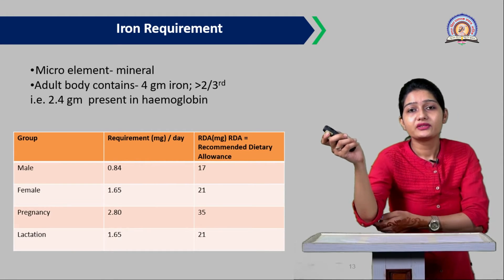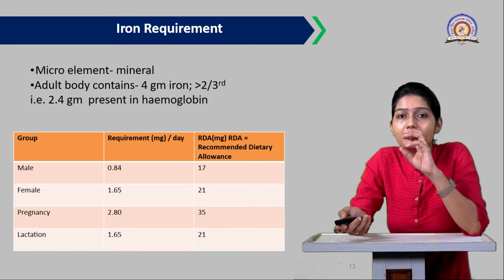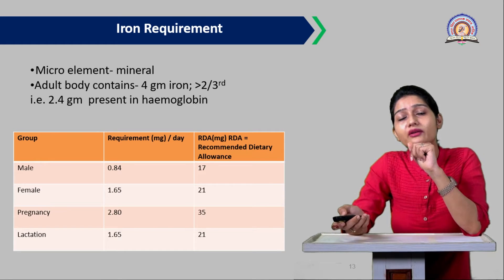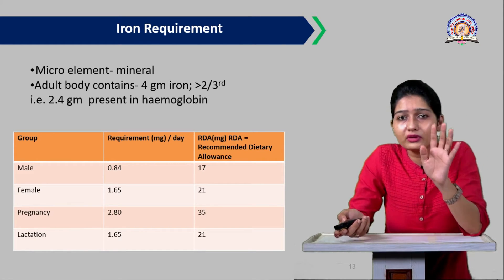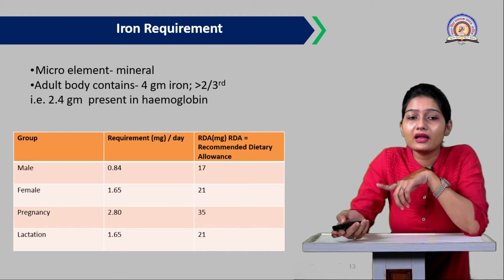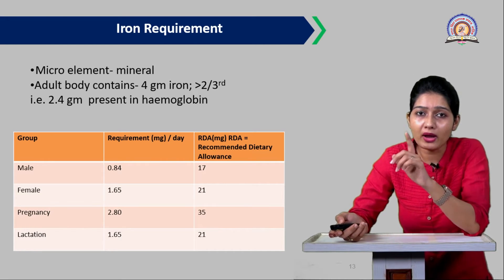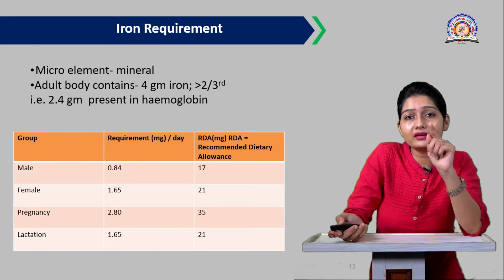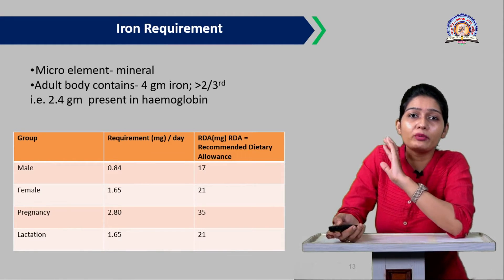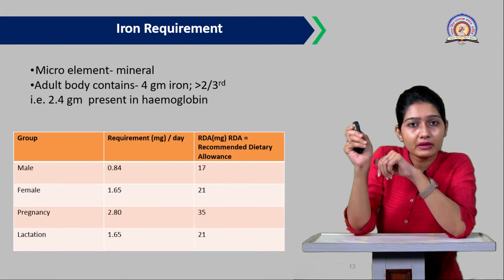Regarding the iron requirements of our body, an adult contains approximately 4 grams of iron. Two-thirds of this — about 2.4 grams — is present in hemoglobin. If hemoglobin concentration is low in the body, the iron provided by hemoglobin will be affected. A chart is given to understand the requirement of iron in milligrams per day.